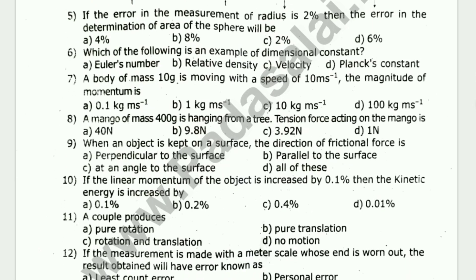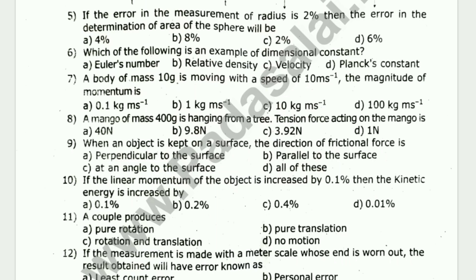If the error in the measurement of radius is 2%, then the error in the determination of the area of the sphere is... The error will be...